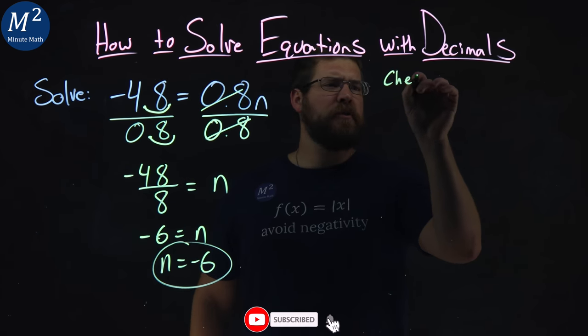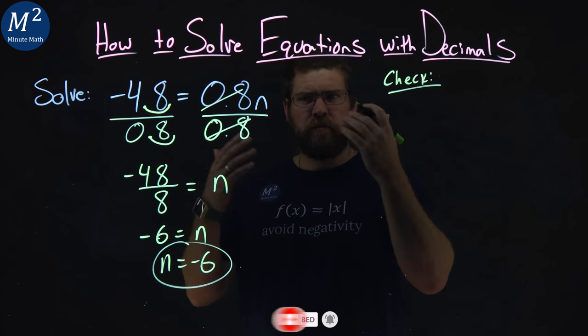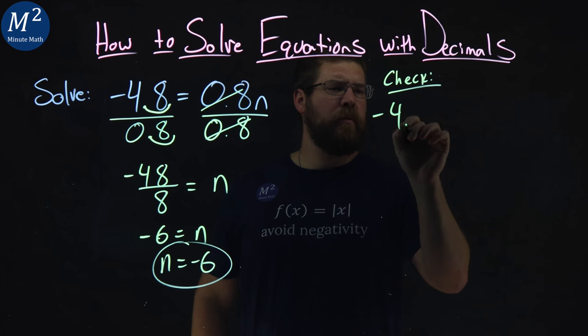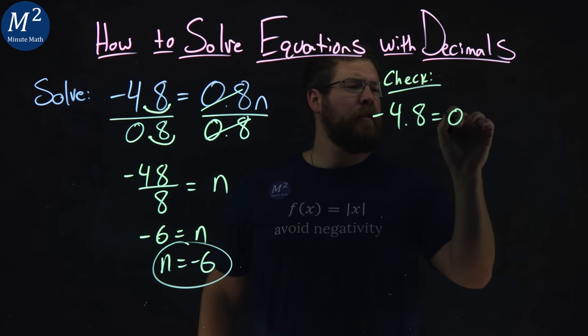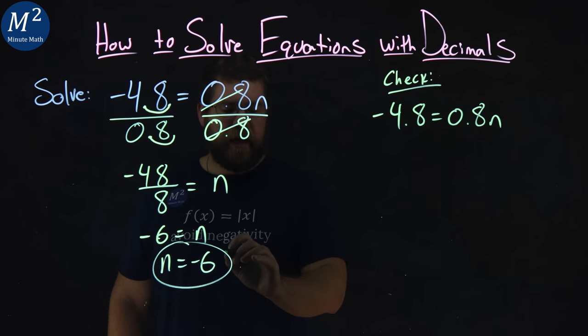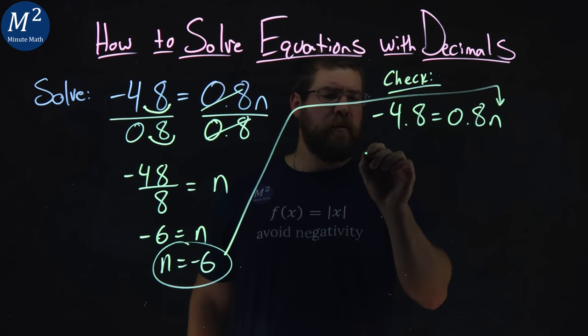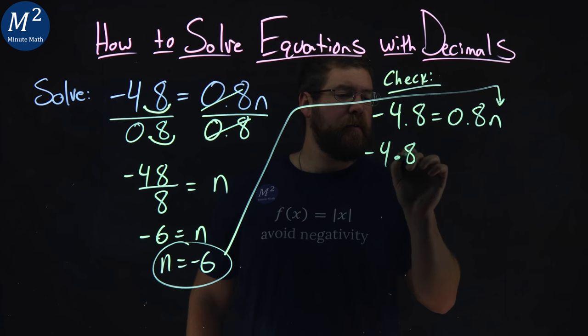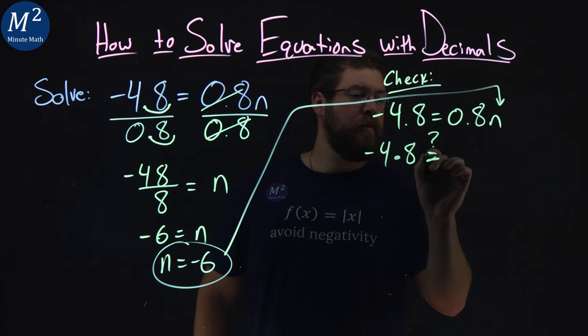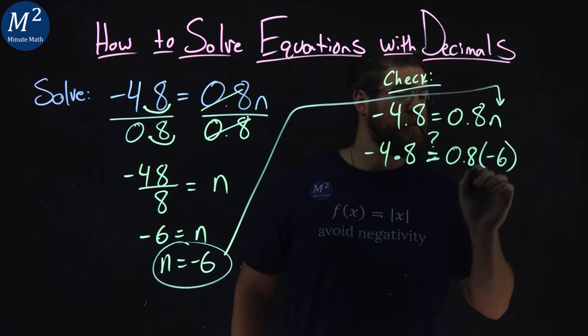But now we want to check that to make sure the rule is right. To check our work, we rewrite our initial equation, negative 4.8 equals 0.8n. And from there, we're going to take negative 6, and substitute that in for n. So, is negative 4.8 equal to 0.8 times negative 6?